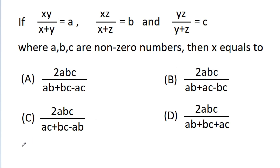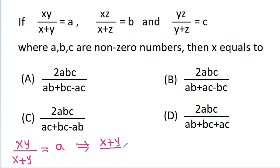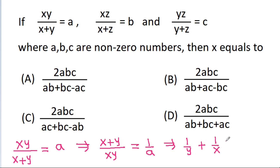So we have given that xy by x plus y is equal to a, and simplifying, x plus y by xy is equal to 1 by a, and simplifying x by xy is 1 by y plus y by xy is 1 by x, that is equal to 1 by a.